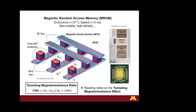In MRAMs, binary information is stored in magnetic tunnel junctions — for instance, logic one is assigned to the anti-parallel configuration and logic zero to the parallel configuration. What makes this possible is the resistance gap between these two configurations. To have well-defined bits and reliable reading, we need to maximize this resistance gap. We use a figure of merit called the TMR ratio: (R_AP minus R_P) divided by R_P, times 100.